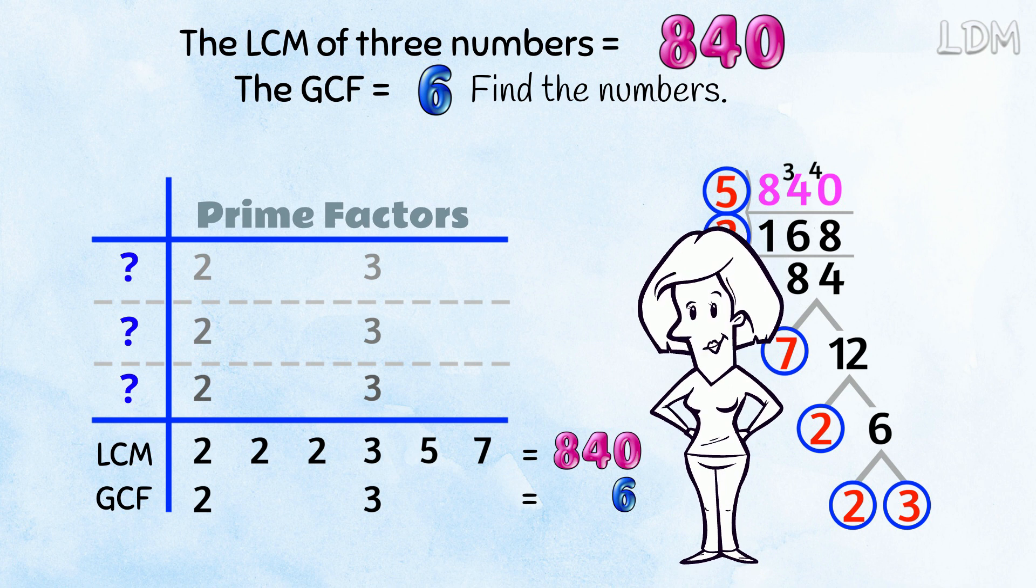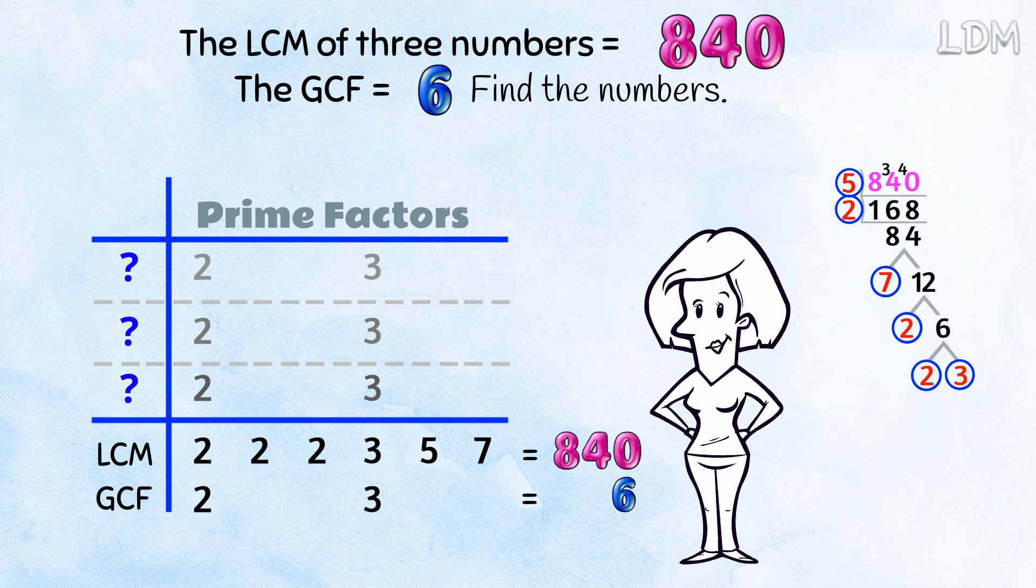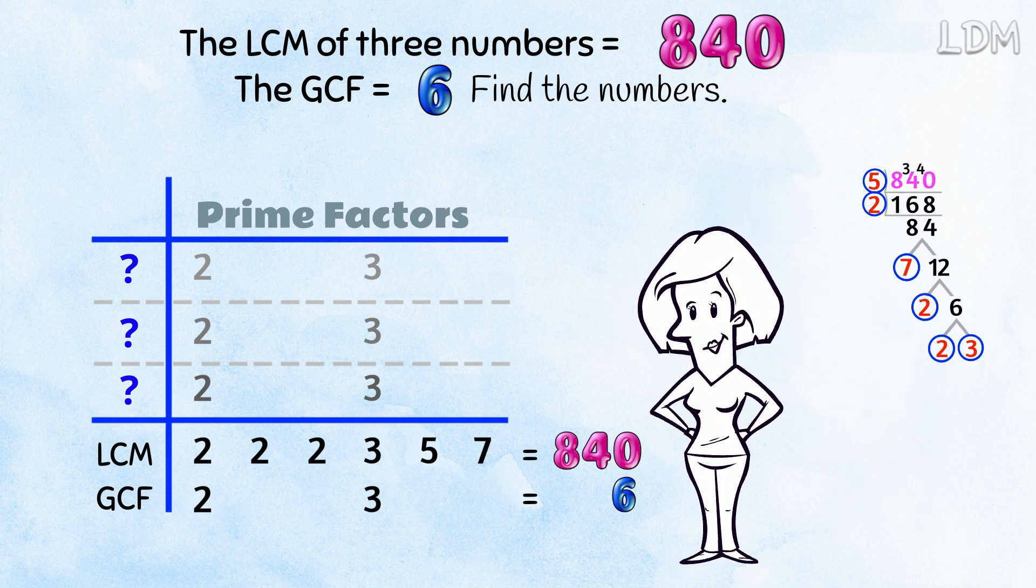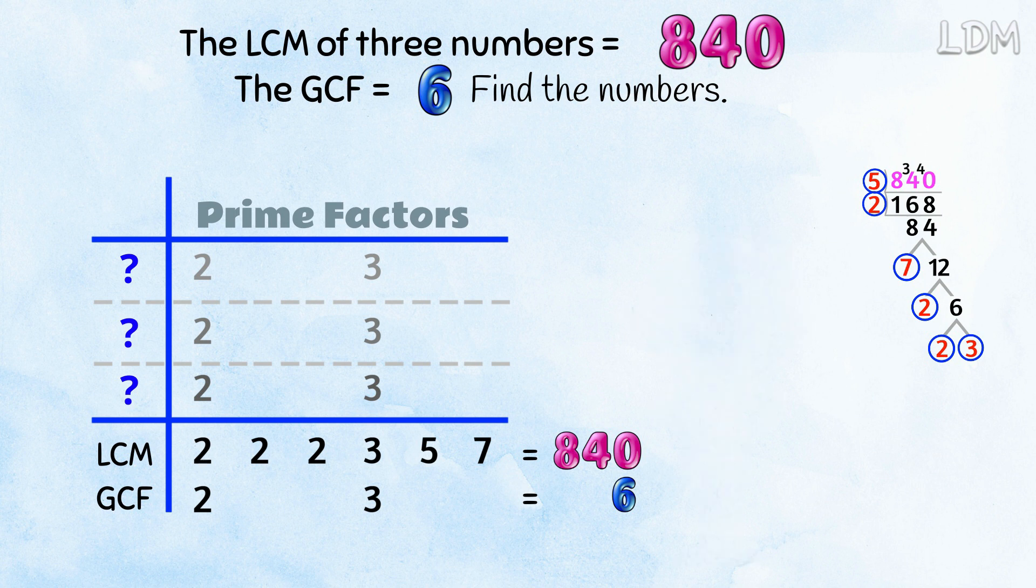And now, we need to use the rest of the primes in some way so that the LCM line is true. Here, I'm going to write 5 and 7. Here, a couple of 2s. And here, a 7.